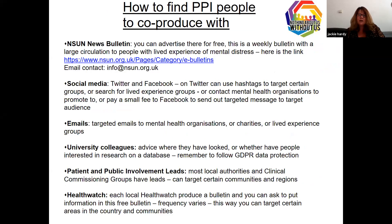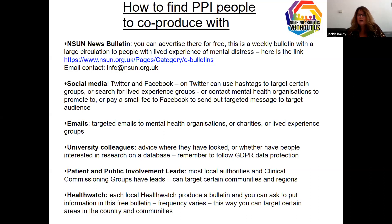How can you find patient and public involvement to co-produce with? NSUN and the National Service User Network produce a weekly bulletin where you can advertise for free. There are contact details to email if you want to do that, and it goes out to lots of people with lived experience. Social media - Twitter and Facebook - are good places. Targeted emails to mental health organisations, charities, or groups work well. Talking to university colleagues is helpful too, as they may have a database or advice, though you must make sure you're following GDPR data protection.